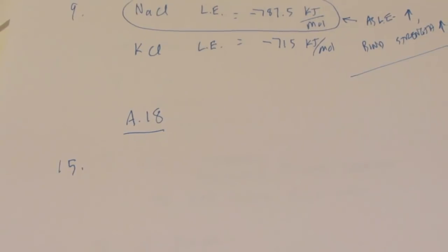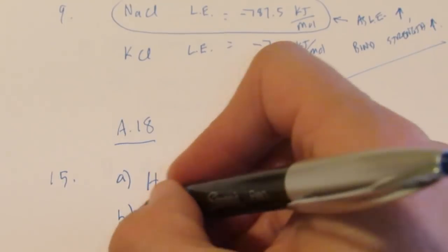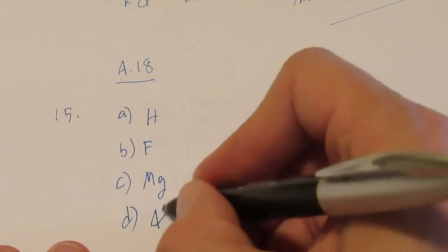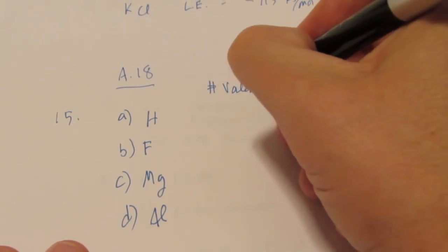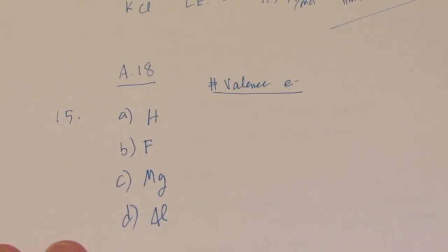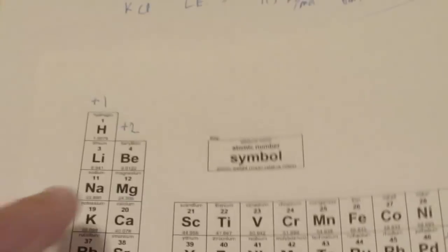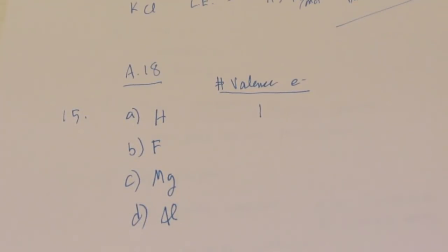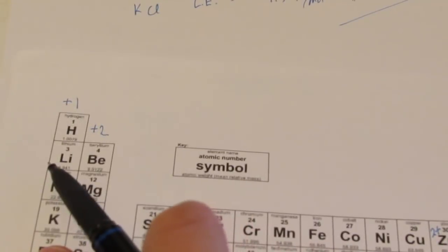Number 15 reads, determine the number of valence electrons in the following atoms. I'll do a few of these for you — we have H, F, Mg, and I'll do aluminium for you as well. Hopefully you guys remember that valence electrons are related to the group number. The last digit in the group number tells you how many valence electrons it has. So hydrogen's in group 1 — it has one valence electron. Fluorine is all the way over in group 17.